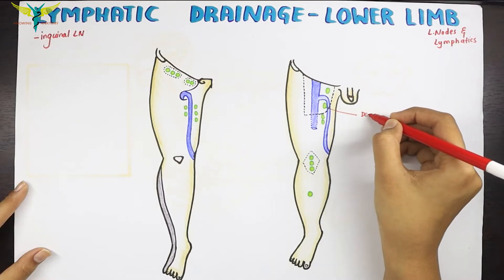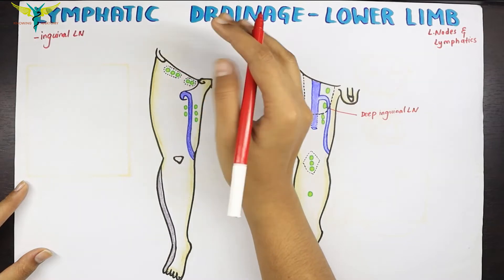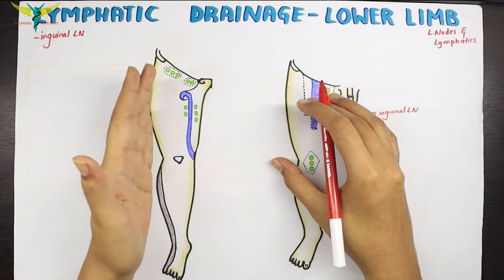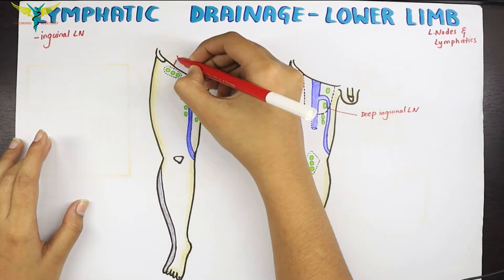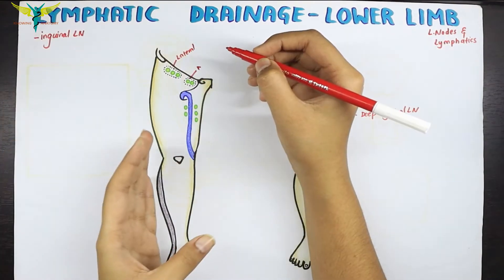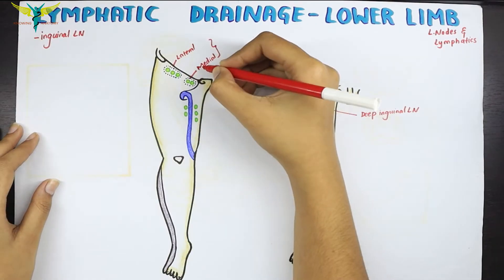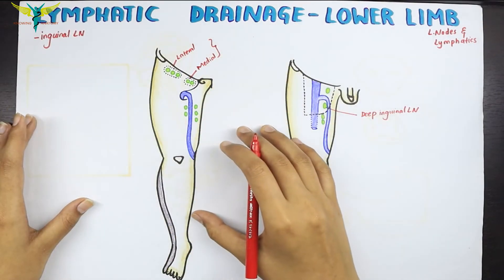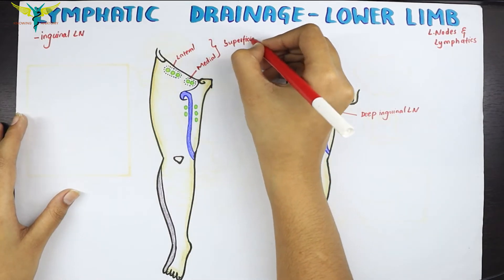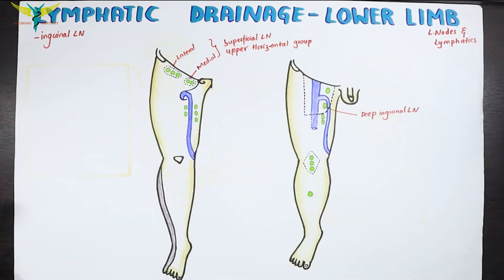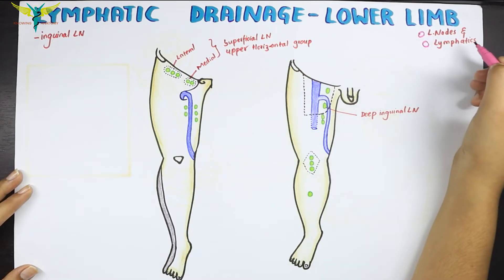This group is the deep inguinal lymph nodes, and here are the superficial. The group which lies lateral to the body are the lateral component, and the group which lies medially are the medial component. These together form the upper horizontal group of the superficial inguinal lymph nodes. The lymphatic drainage of the lower limb occurs from the lymph nodes and the lymphatics.